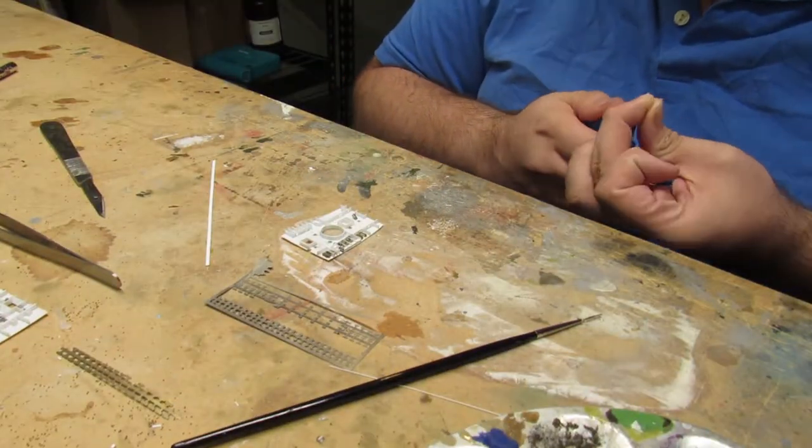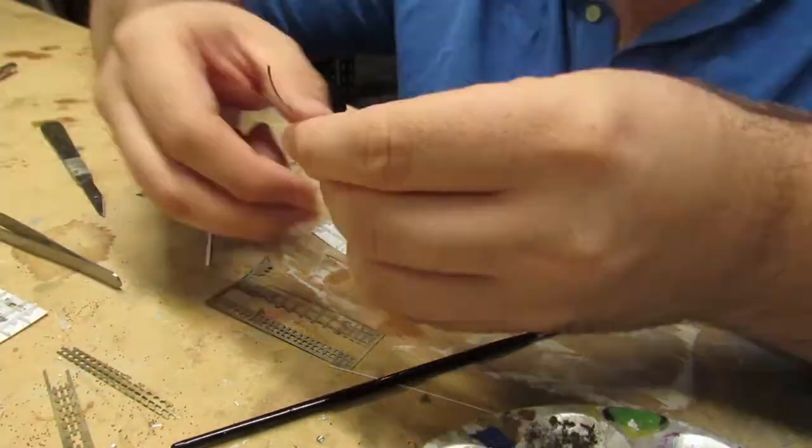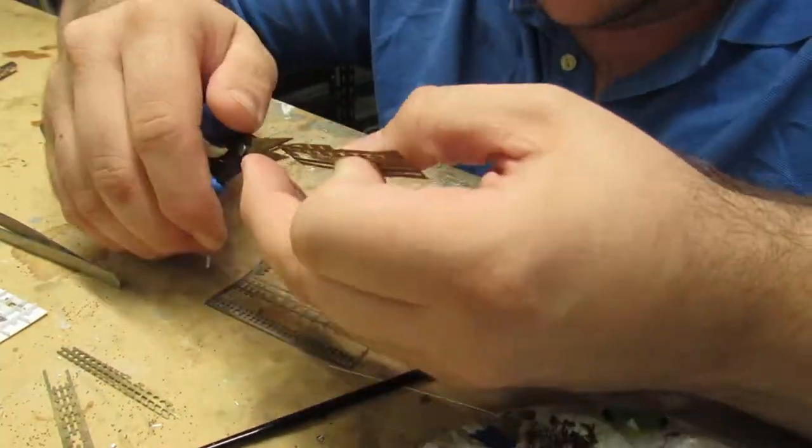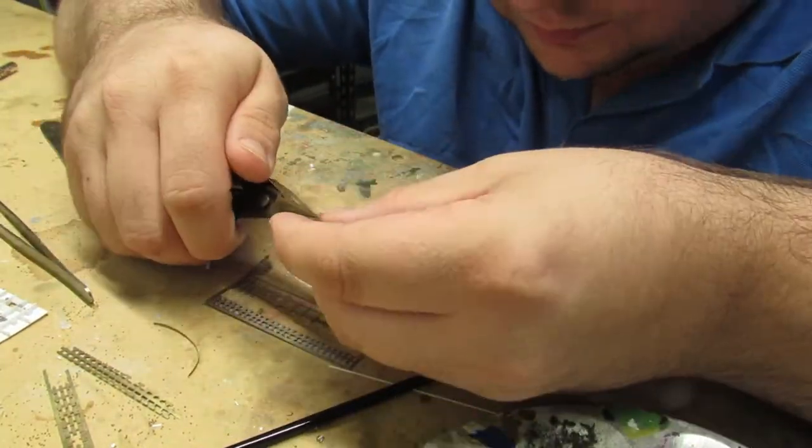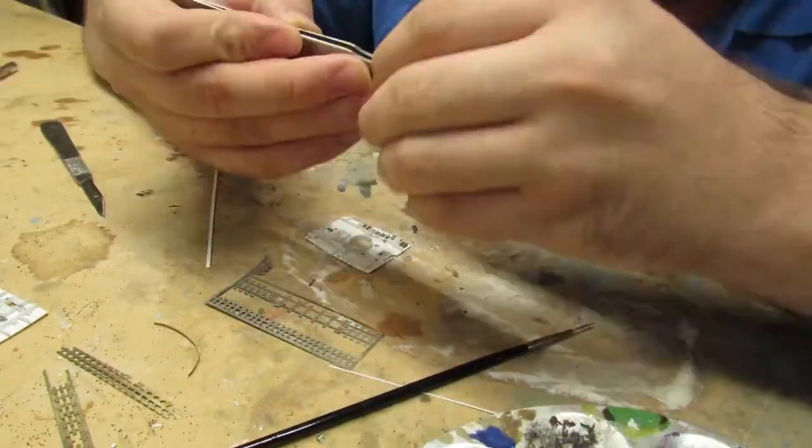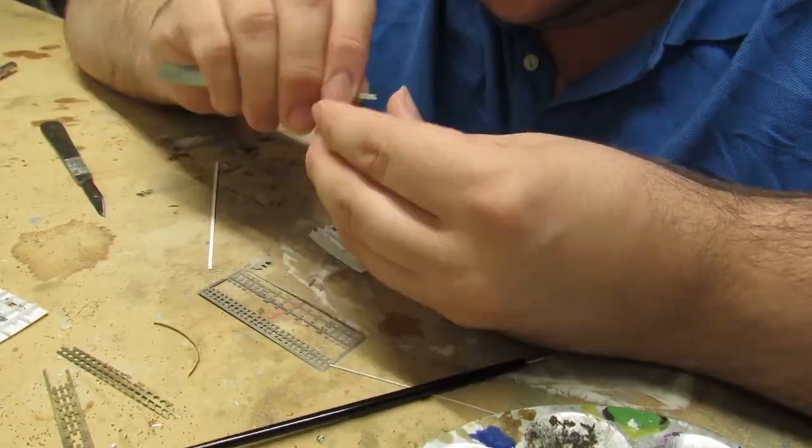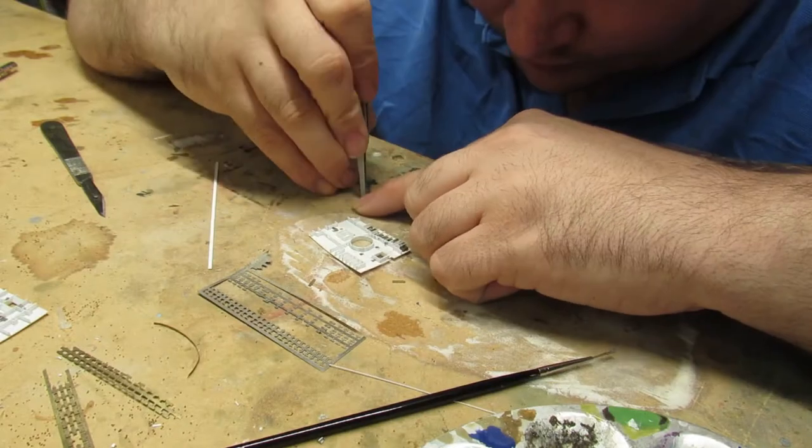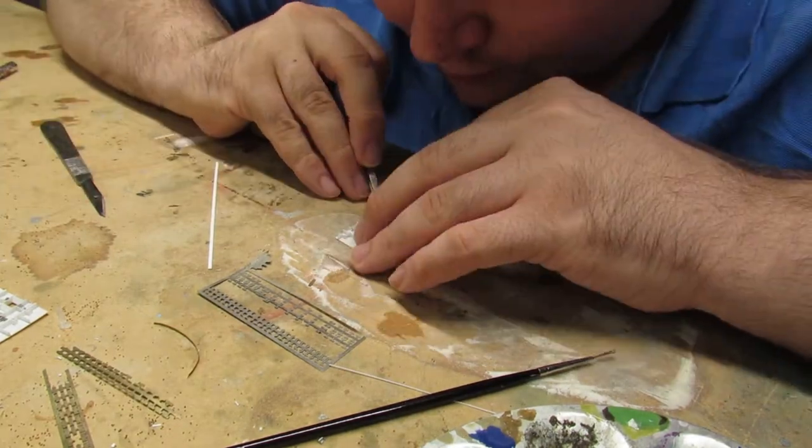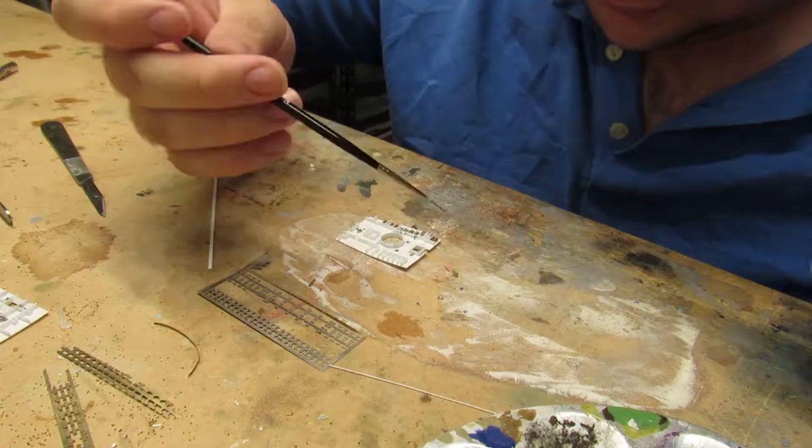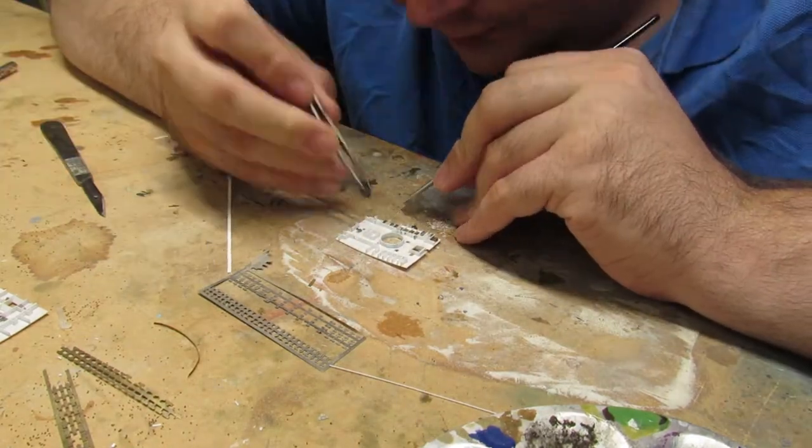This is going to be a fairly repetitive episode, but that always seems to be the thing with me and photo etch because there's just so many little pieces. Here I am folding up the table, laying it in one position, gluing it down.